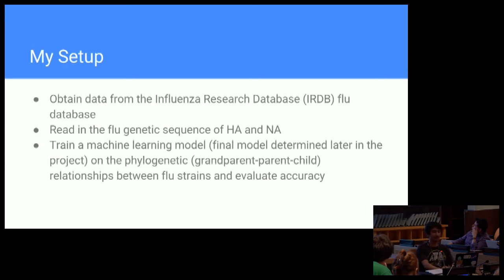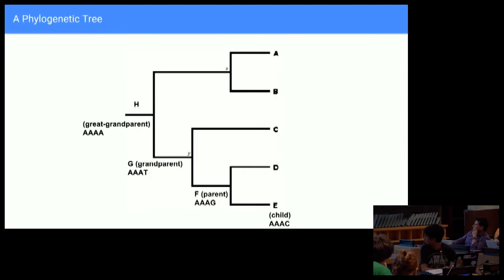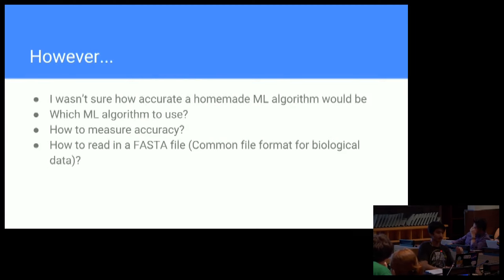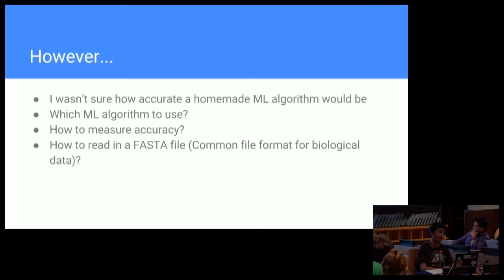My setup was to first obtain data from the Influenza Research Database, or IRDB, which is funded by the National Institutes of Health, and read in the genetic sequences of hemagglutinin and neuraminidase, and train a machine learning model based on the phylogenetic relationships. But being inexperienced, I wasn't sure how a homemade machine learning model would work, because the flu data is quite complex. I also wasn't sure what machine learning model to use, how to measure accuracy, and how to read in a FASTA file, which is a common file format for biological data.